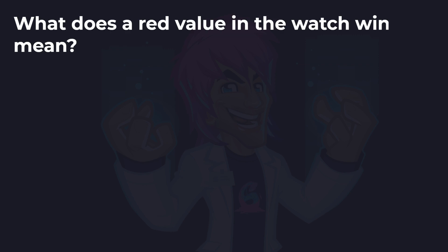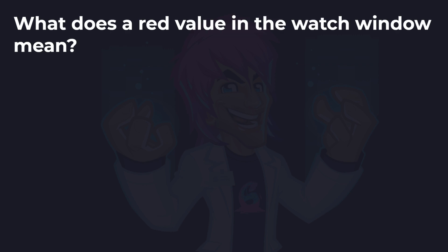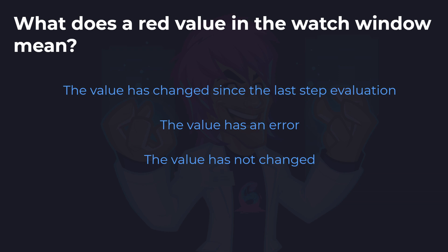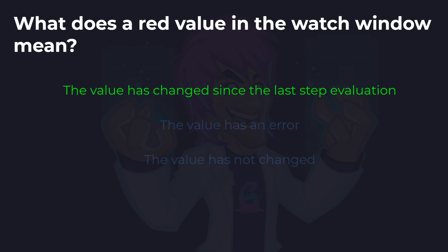Second to last question: what does the red value in the watch window mean? Is it that the value has changed since the last step evaluation, the value has an error, or the value has not changed? This is the watch window when we are inspecting variables while debugging and their values as they change. The answer is: the value has changed since the last step evaluation. As we saw when we stepped over code to set the first variable, it changed to red when the value updated, and then went back to white because nothing had changed since the last step.